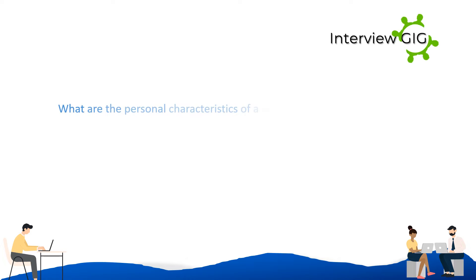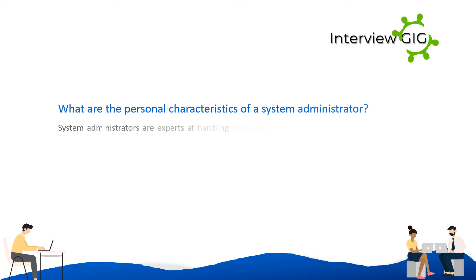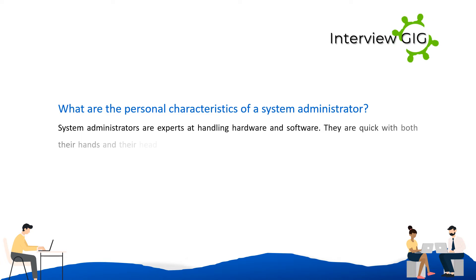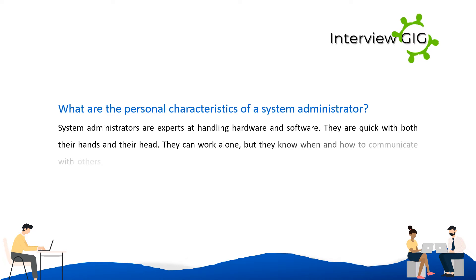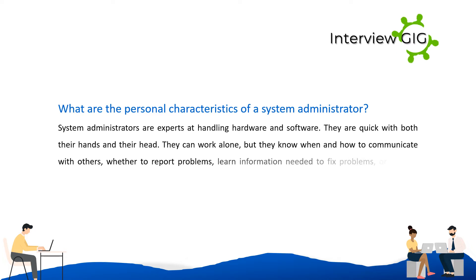What are the personal characteristics of a system administrator? System administrators are experts at handling hardware and software. They are quick with both their hands and their mind. They can work alone but know when and how to communicate with others — whether to report problems, learn information needed to fix problems, or instruct employees regarding technical issues.